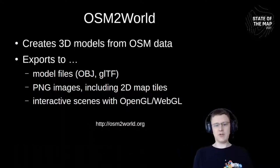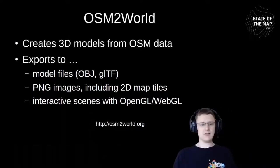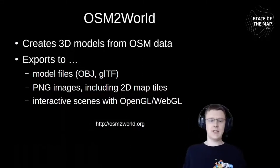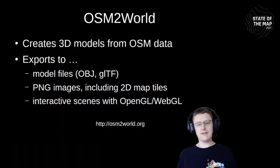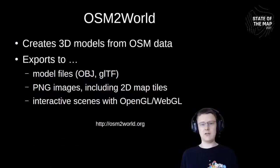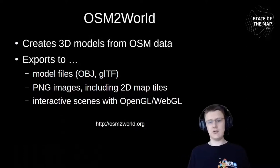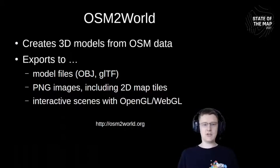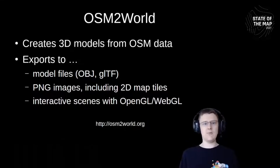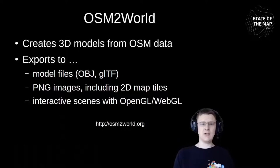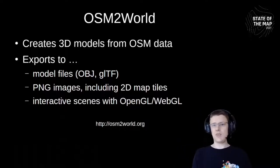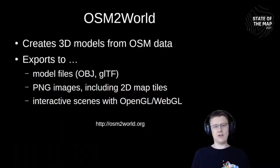There are a lot of things you can do with 3D models, and OSM2World accommodates these use cases through a large number of output formats. It exports 3D models to standardized formats supported by gaming engines, 3D printing tools, and modeling tools. It generates PNG images including tiled images for Leaflet and OpenLayers, and it generates interactive scenes for OpenGL or WebGL. It's available at osm2world.org, with documentation on the OpenStreetMap wiki.